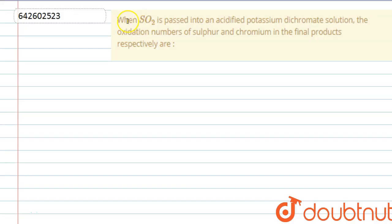Hello everyone, let's start this question. What the question says is, when SO2 is passed into an acidified potassium dichromate solution, the oxidation numbers of sulfur and chromium in the final products respectively are.